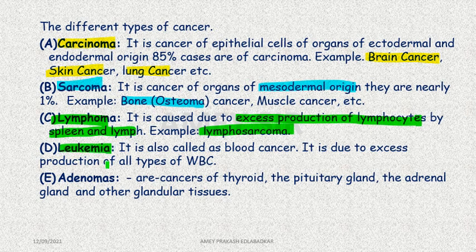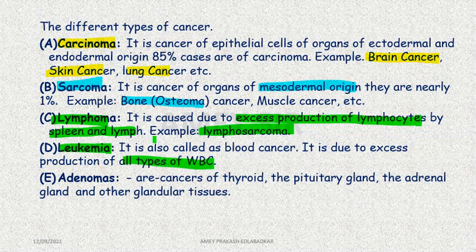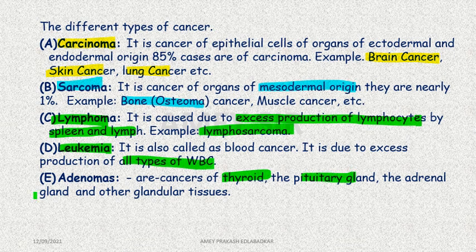Leukemia is blood cancer — excess production of all types of WBCs; millions of abnormal, immature WBCs are present, incapable of fighting infection. Types include lymphoblastic leukemia and monocytic leukemia. Adenocarcinoma is another important type, covering thyroid gland, pituitary gland, adrenal gland, and other glandular tissue cancers.